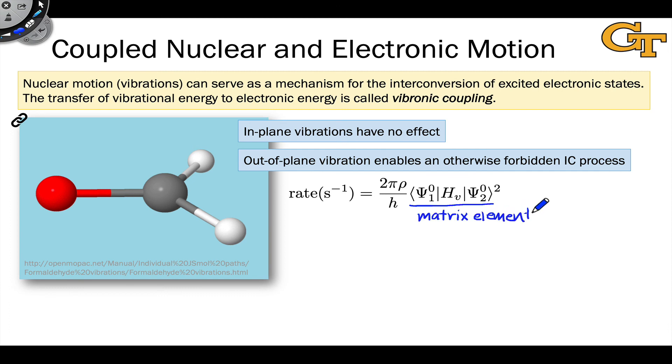And more precisely, this is the matrix element for the vibronic perturbation, Hv. Hv is a perturbation that mixes the vibration with the electronic wave functions and allows us, for example, a non-zero probability of going from the initial to the final state.